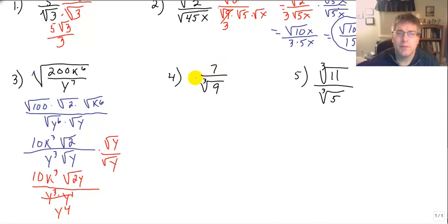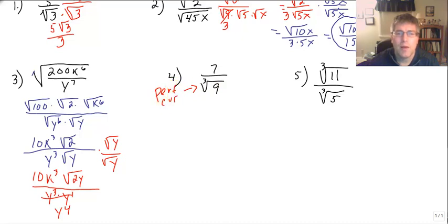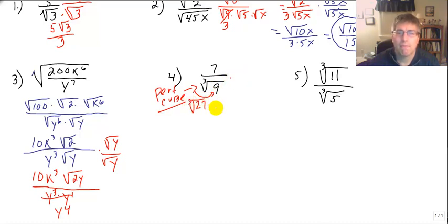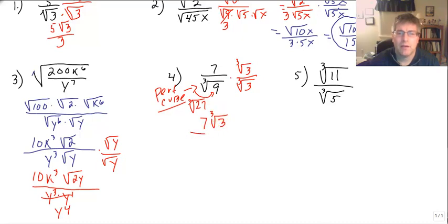Samples four and five are a little different — now we have cube roots. This is more complicated. I can't just multiply by the cube root of nine, because I'd get the cube root of 81, which is not a perfect cube. What I need is a perfect cube radicand. 27 is a perfect cube, so that becomes my goal. I multiply top and bottom by the cube root of three over the cube root of three. Now I get seven cube root of three all over the cube root of 27, which is three. So the answer is seven cube root of three all over three.